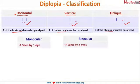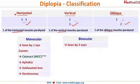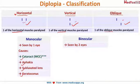Diplopia is also divided into monocular or binocular. Monocular diplopia is seen when the patient closes one eye and is seeing with only one eye. It is seen in cataract, aphakia, subluxated lens, or keratoconus — all of these conditions affect only one eye most commonly, and so they cause monocular diplopia.